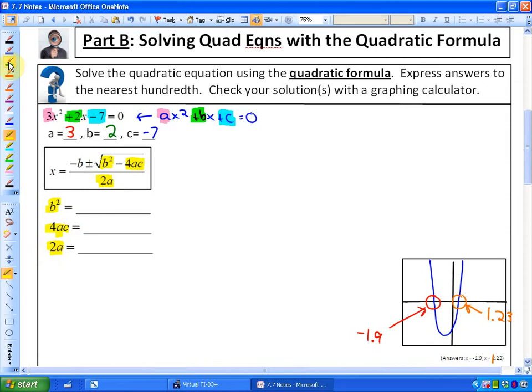So b squared would be 2 squared, which is 4. 4ac would be 4 times a, which is 3, times c, which is negative 7. If we multiply those values, we get negative 84. And finally, 2 times a would be 2 times 3, which equals 6.